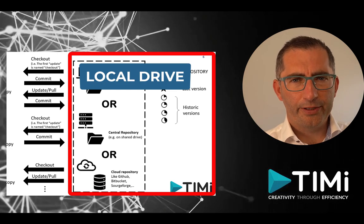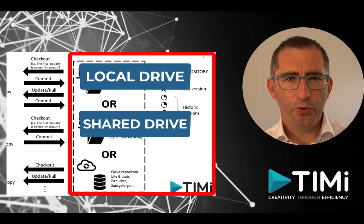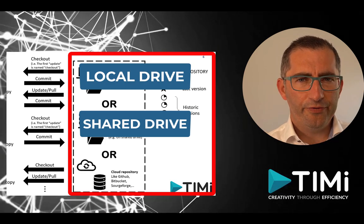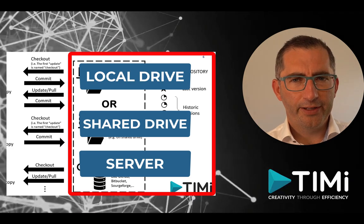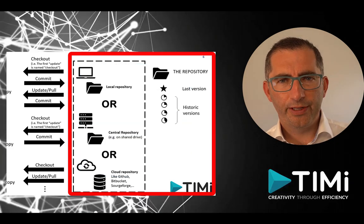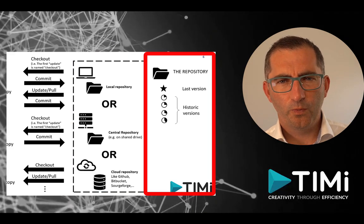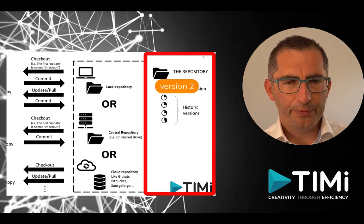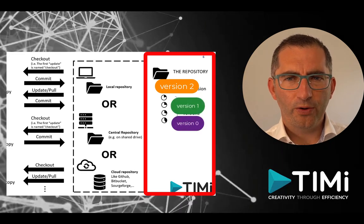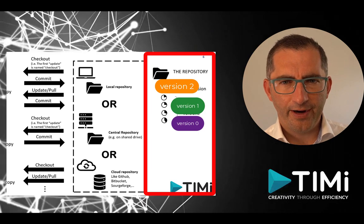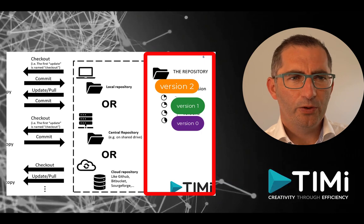The repository can be as simple as a drive on your local hard drive, though then you can't collaborate with others. It can be stored on a shared drive used by the whole team, or on an external server in your network or in the cloud — for example, GitHub is a repository in the cloud. Within the repository you always see the last version on a simple checkout or update, but diving in you can also see all historic versions of that same file and every published change.